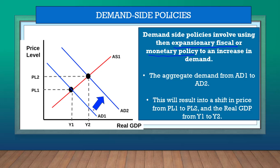The demand will increase from AD1 to AD2. With this shift, we get a new GDP output — GDP increases from Y1 to Y2, which is good because more goods are being produced and the economy is doing well. However, if we only use the demand side policy, we also get a new price level PL2, meaning the price goes up from PL1 to PL2. That's inflation, and we don't want inflation — this is where the supply side policies come in.